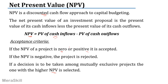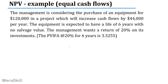That is all there is to the NPV. Let us look at an example with equal cash flows. The management is considering the purchase of equipment for $120,000. This will increase the cash flows by $44,000 every year. The equipment will have a life of six years with no salvage value. The management wants a return of 20% on its investments. At the end of each year I will get $44,000. One option is to look at the present value each year individually. But the shorter approach uses the annuity factor because these are equal cash flows.